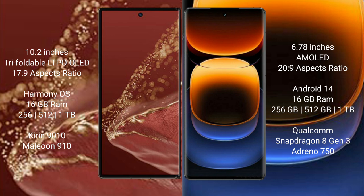Huawei Mate XT Ultimate comes with 16 GB RAM and 256 GB, 512 GB, or 1 TB internal storage, powered by the Kirin 9010 processor with 8 GPU cores. Vivo iQOO 12 Pro also comes with 16 GB RAM and 256 GB, 512 GB, or 1 TB internal storage, powered by the Qualcomm Snapdragon 8 Gen 3 processor and Dimensity 50 GPU.